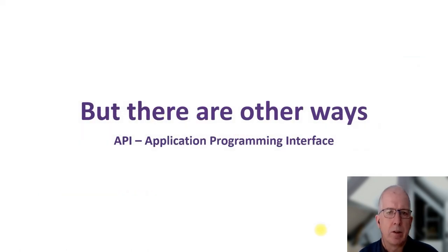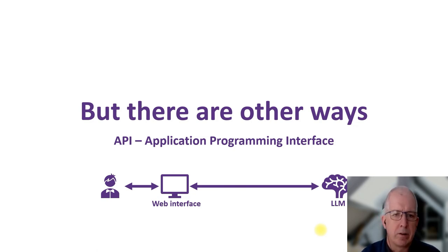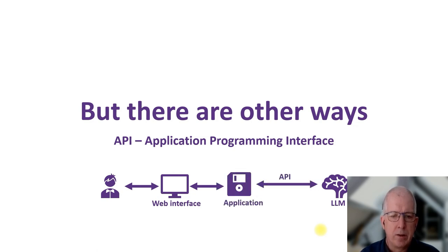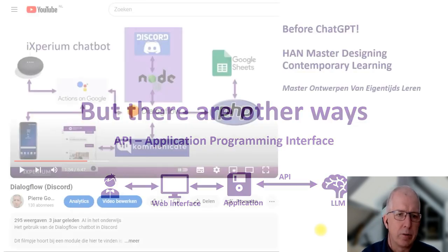One of those ways is using an application programming interface or an API. This is sort of like what we did last night - the user, the web interface, and you talk directly to the large language model. With an API you can write an application and that application then talks to the large language model and talks to the web interface, so you can do all kinds of cool stuff in between. That's what I did in the demos I showed last night.